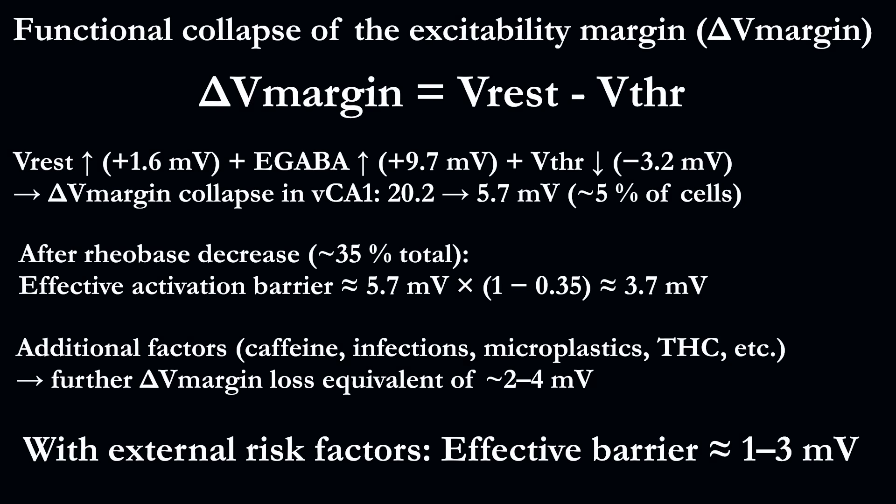As a result, the margin between the resting potential and firing threshold, after accounting for risk factors and rheobase reduction, measures as little as 1 to 3 mV. In such a sensitive network, even a normal theta or gamma oscillation — and especially a dendritic plateau potential of 5 to 6 mV — can spontaneously cross the threshold and trigger memory replay.